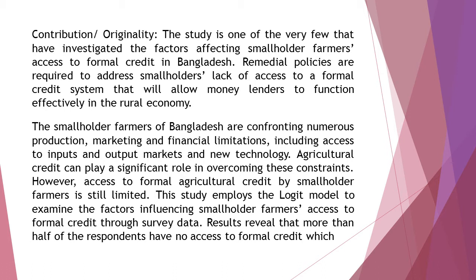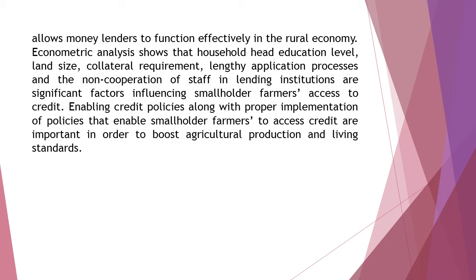This study employs the Logit model to examine the factors influencing smallholder farmers' access to formal credit through survey data. Results reveal that more than half of the respondents have no access to formal credit, which allows money lenders to function effectively in the rural economy. Econometric analysis shows that household head education level, land size, collateral requirement, lengthy application processes, and the non-cooperation of staff in lending institutions are significant factors influencing smallholder farmers' access to credit. Enabling credit policies along with proper implementation of policies that enable smallholder farmers to access credit are important in order to boost agricultural production and living standards.